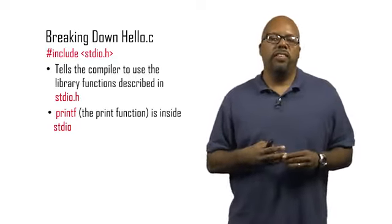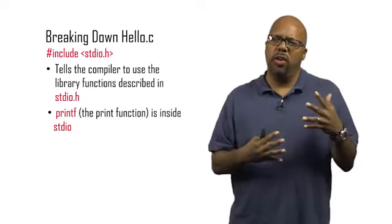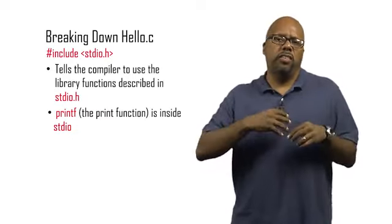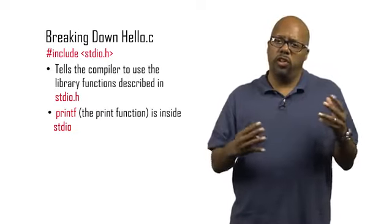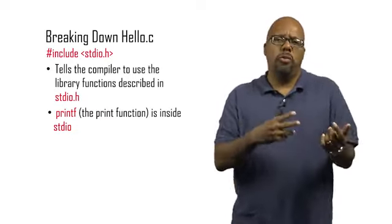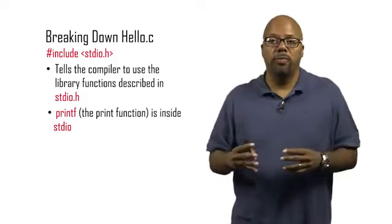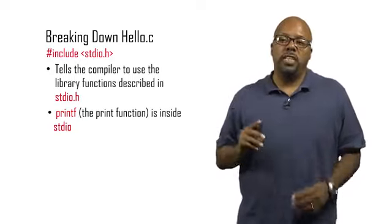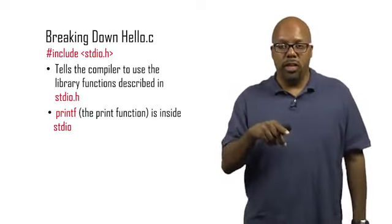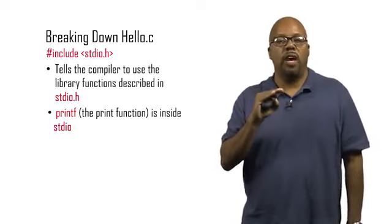Now the .h file, what that does is it just takes all the library functions and defines them. It doesn't define all the library functions, it defines their inputs and outputs. It doesn't have all the code for them, but it says each function takes one input, one output, something like that. It gives what are called function prototypes. But the point is that if you want to include a library, use a library, then you have to include at least this header file at the top of your code.